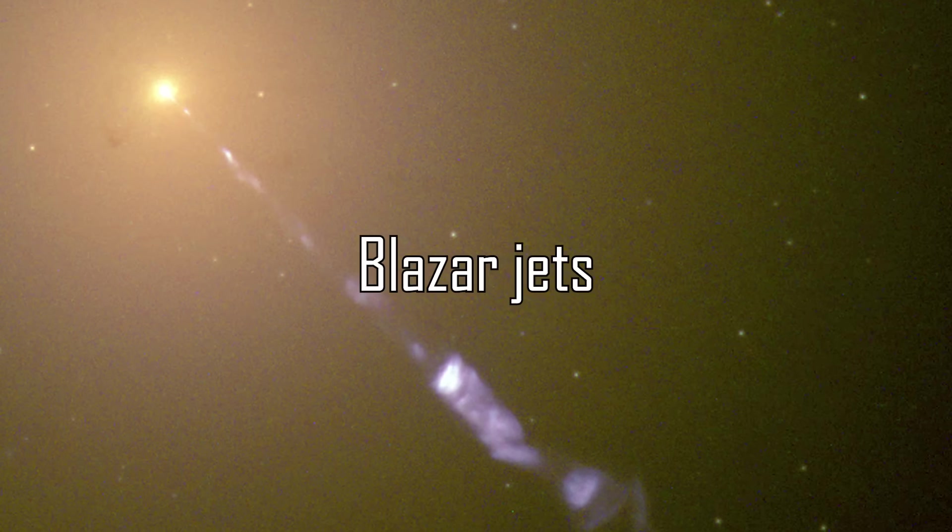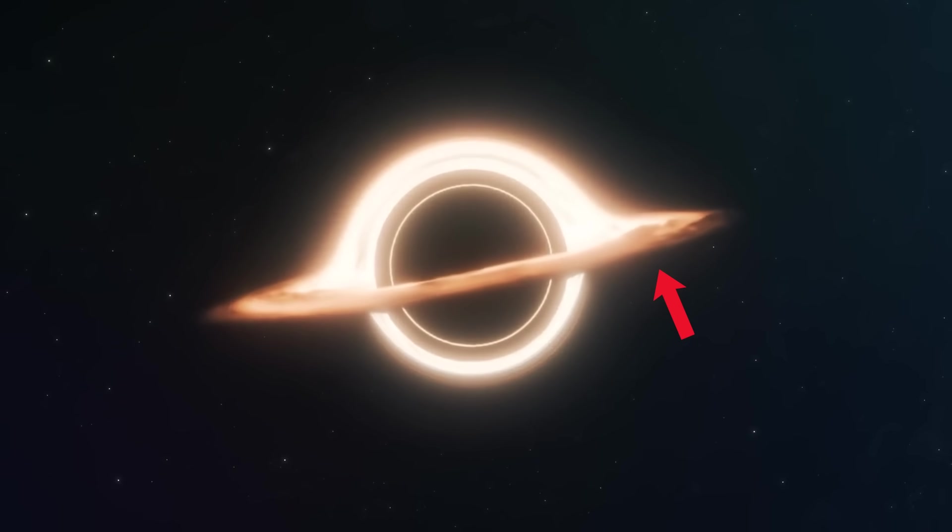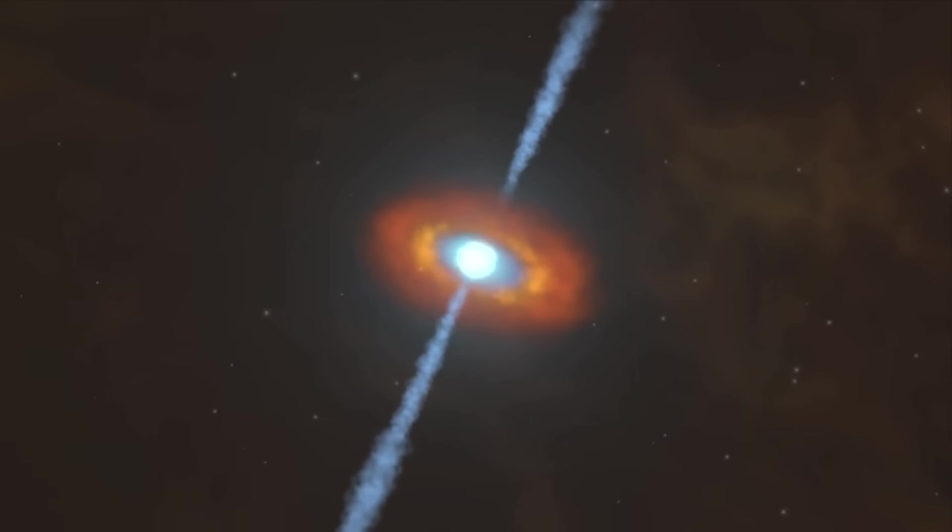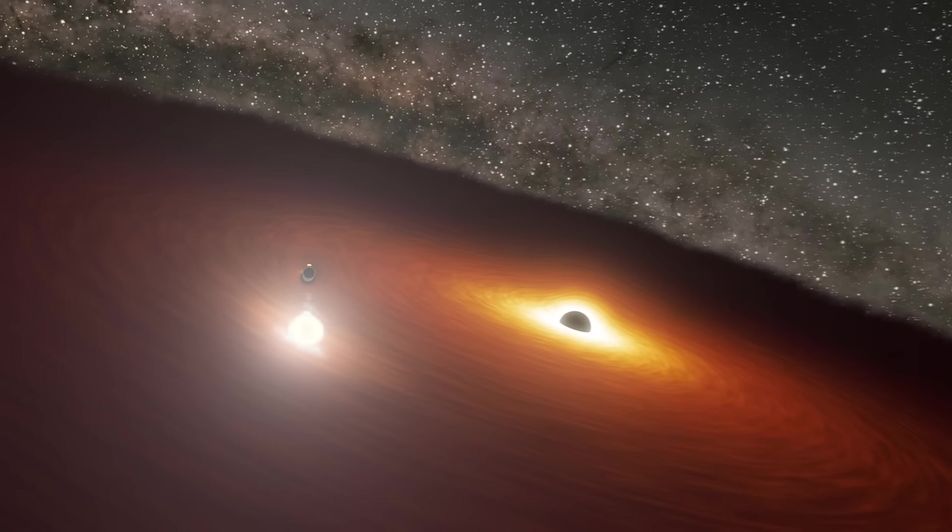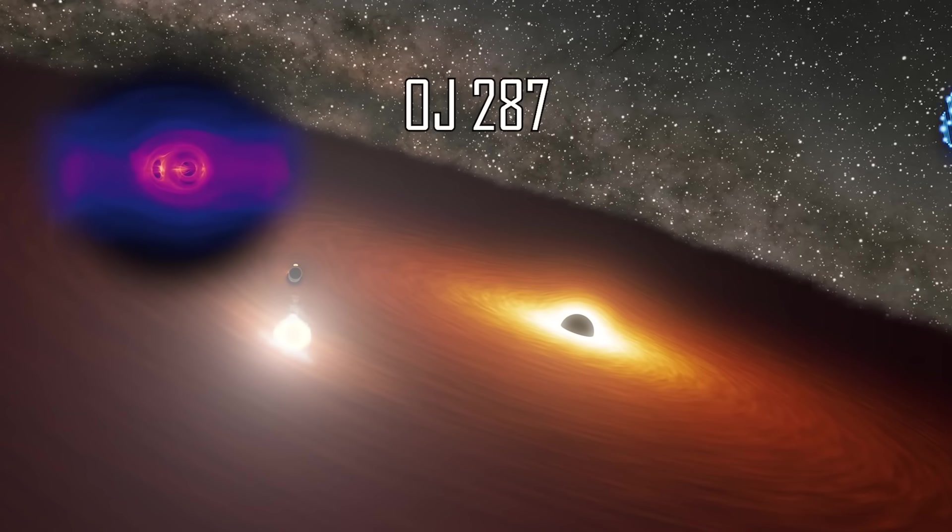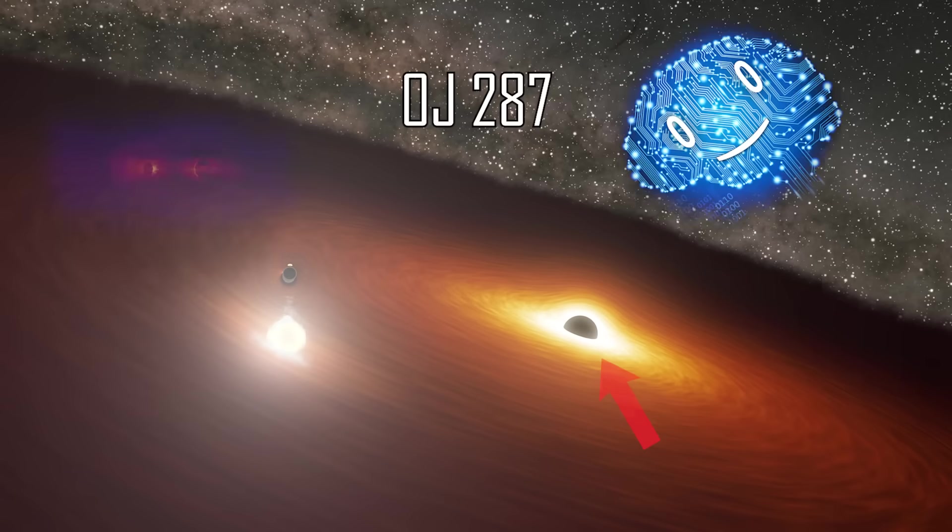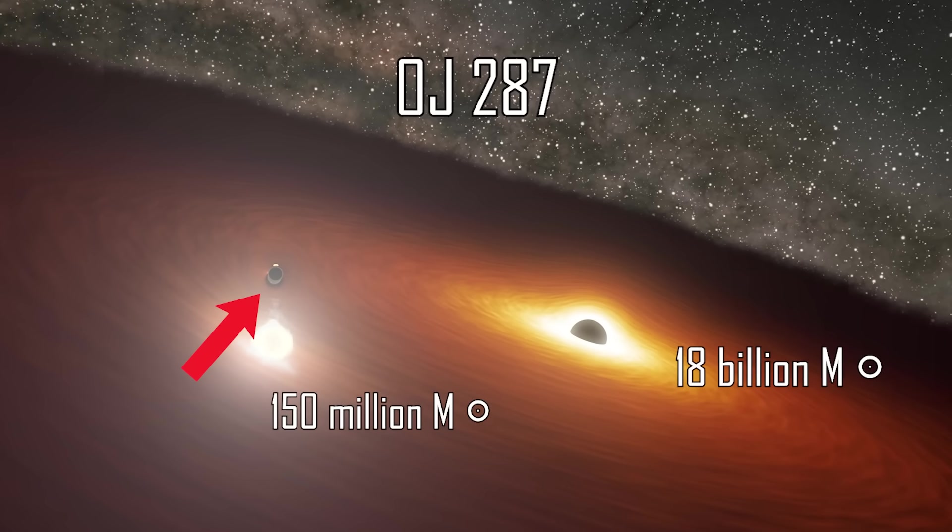Blazar jets. A blazar is what you get when a supermassive black hole with an accretion disk accelerates particles to near light speed directly in our direction for us to observe in its entire glory. One of the craziest examples we've seen is OJ-287, which is a binary system of orbiting black holes, one 18 billion solar masses, and the other a meager 150 million solar masses.